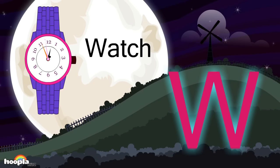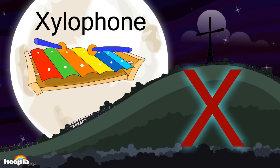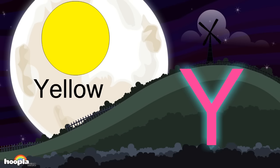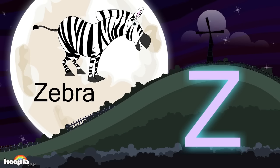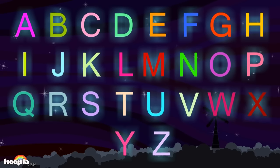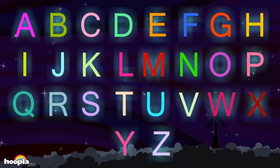W for watch, X for xylophone, Y for yellow, Z for zebra. This is the alphabet song, now it's your turn to sing along.